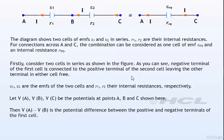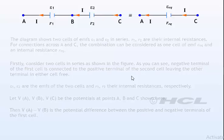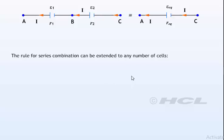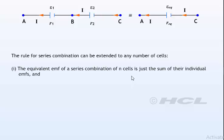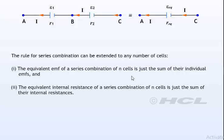Then V of A minus V of B is the potential difference between the positive and negative terminals of the first cell. The rule for series combination can be extended to any number of cells. The equivalent EMF of a series combination of N cells is just the sum of their internal resistances.